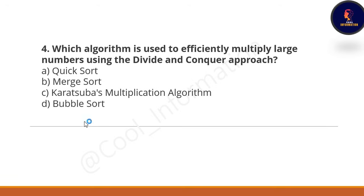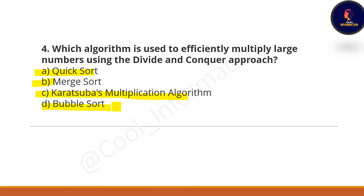Next question: which algorithm is used to efficiently multiply large numbers using a divide and conquer approach? Option A is quick sort, Option B is merge sort, Option C is Karatsuba multiplication algorithm, and Option D is bubble sort. The correct option is Option C — Karatsuba multiplication algorithm.